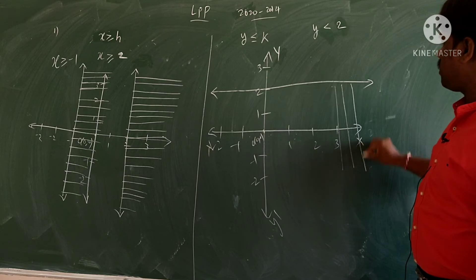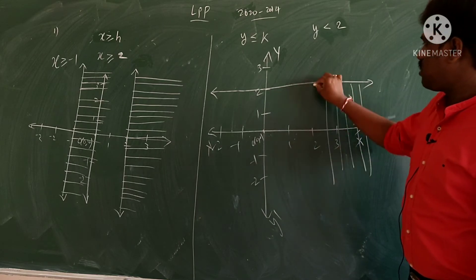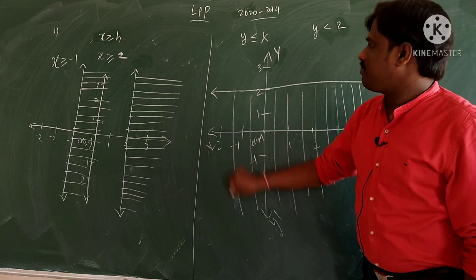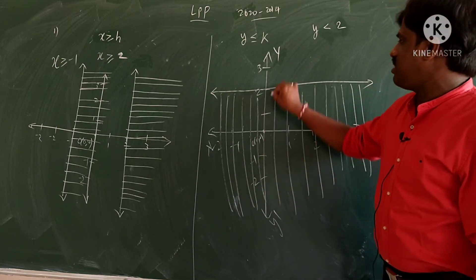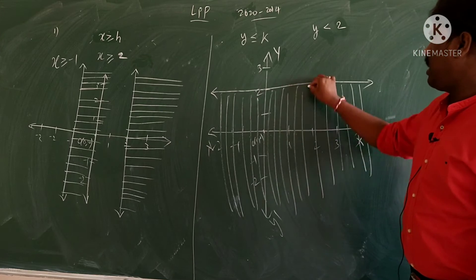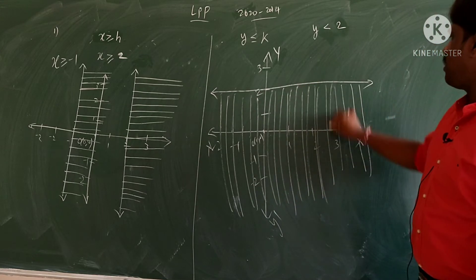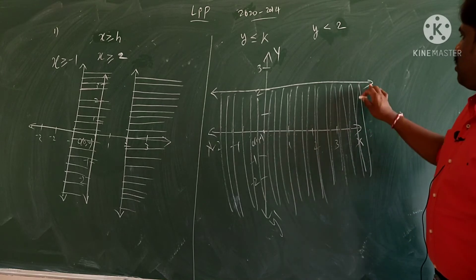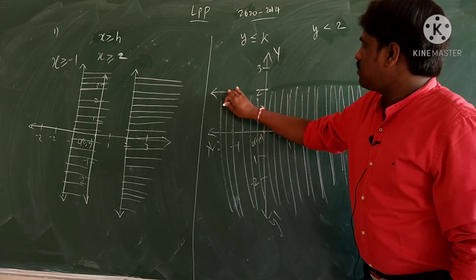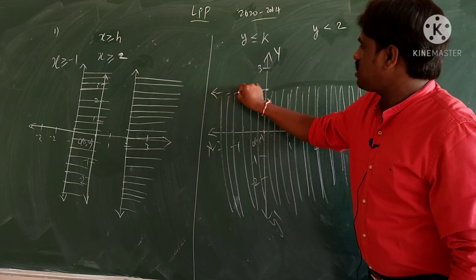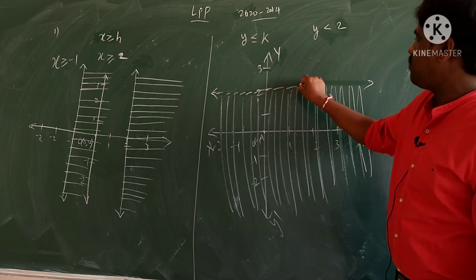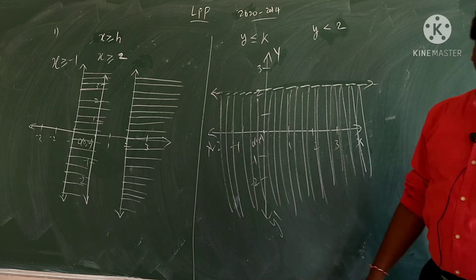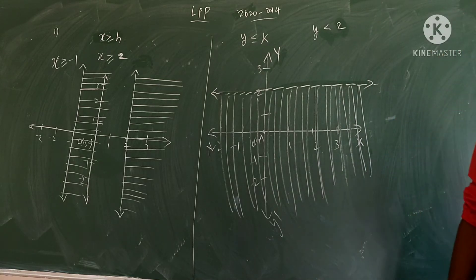Give a small gap - not a large gap, a small gap - and shade it. Alternatively, you can use dotted lines. If you draw dotted lines and shade, that is also acceptable. So this covers the y less than 2 and y greater than 2 related graphs.